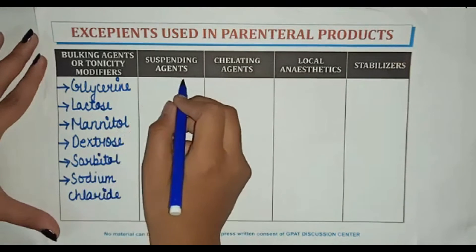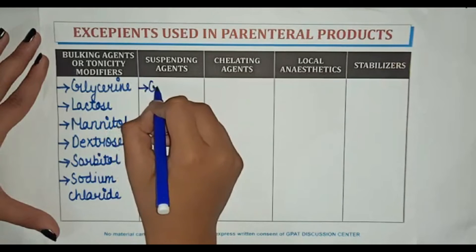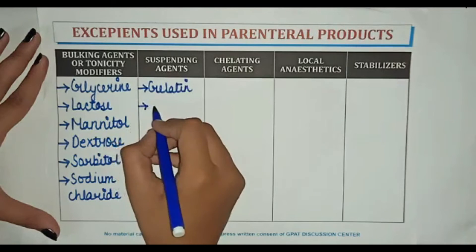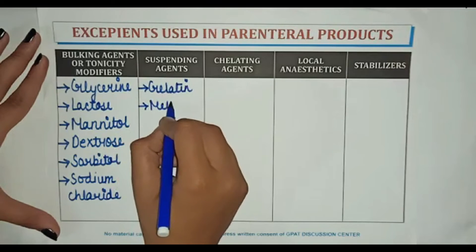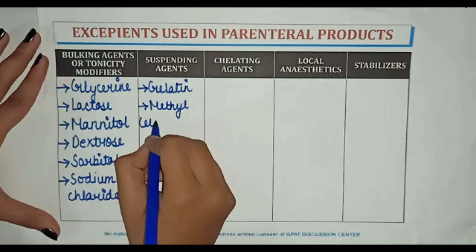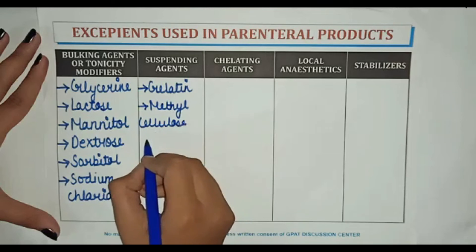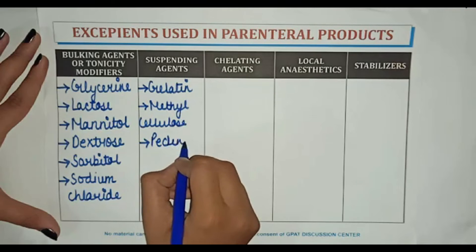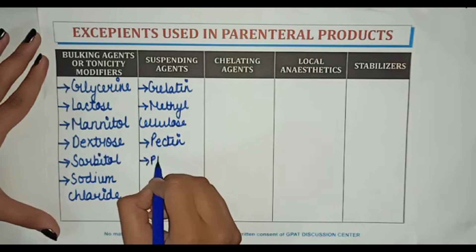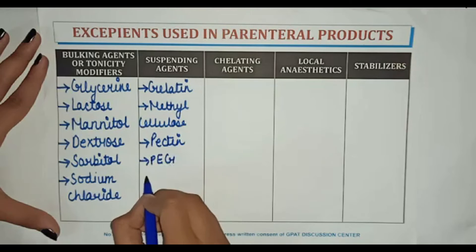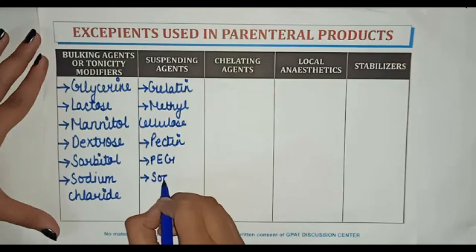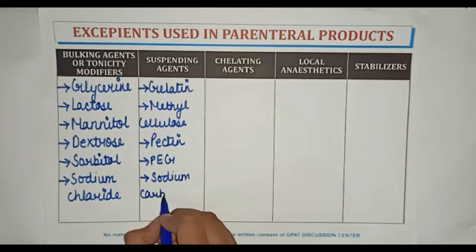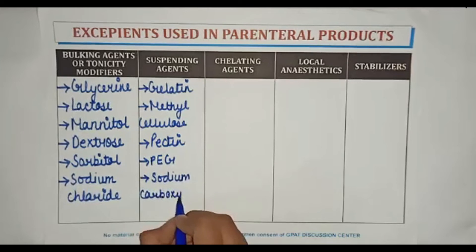Suspending agents used as excipients include: gelatin, methyl cellulose, pectin, PEG, sodium, and carboxymethyl cellulose.